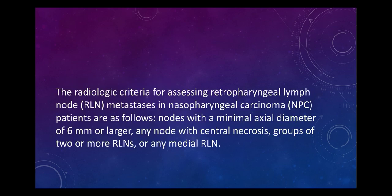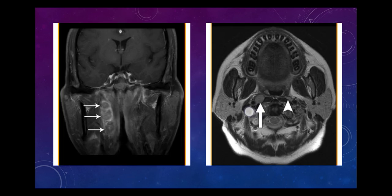The radiologic criteria for assessing retropharyngeal lymph node metastases in nasopharyngeal carcinoma are: nodes with minimal axial diameter of 6 mm or larger, any node with central necrosis, groups of two or more retropharyngeal lymph nodes, or any medial retropharyngeal lymph node. These are the retropharyngeal lymph node metastatic lesions as seen on imaging.